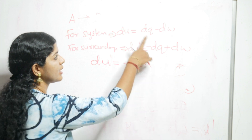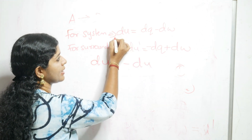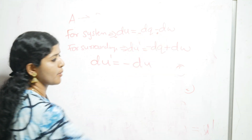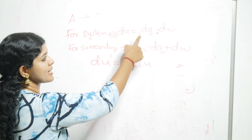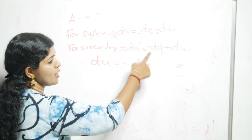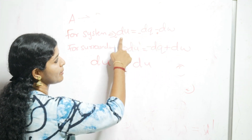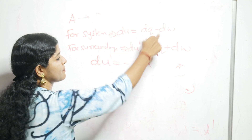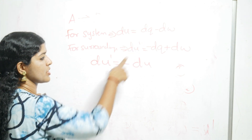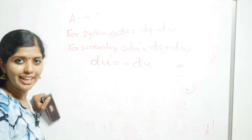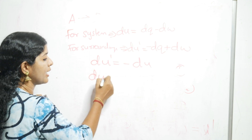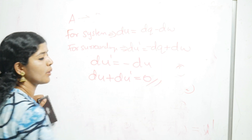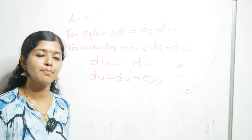So I can rewrite the equation as dU' equals minus of dU. Bringing dU to this side: dU plus dU' equals 0. Hence our first law of conservation of energy is proved.